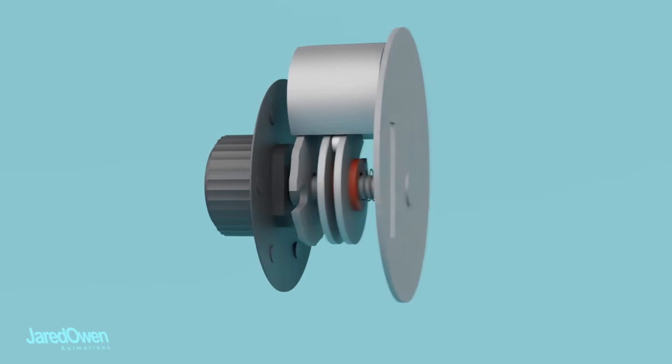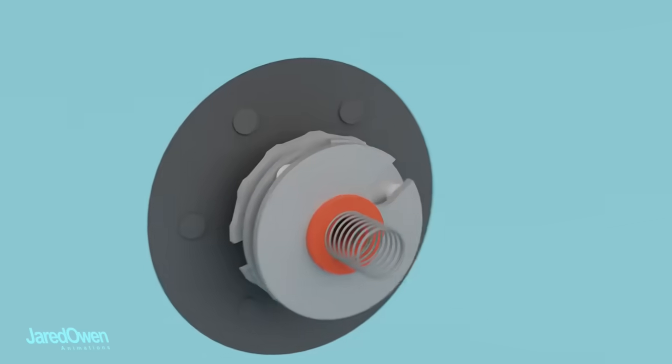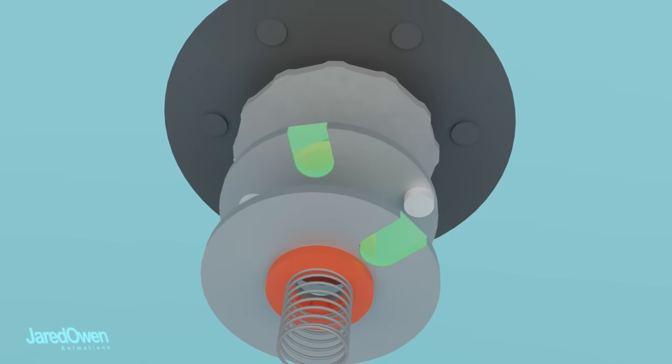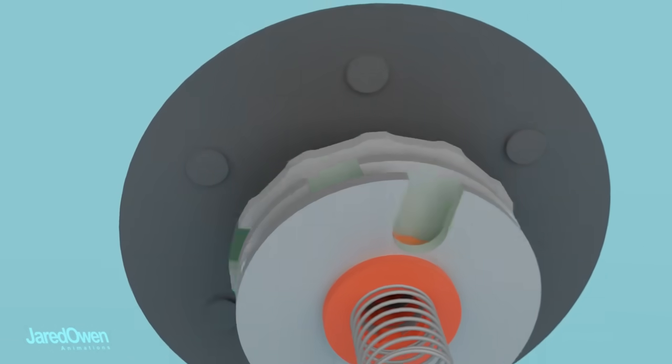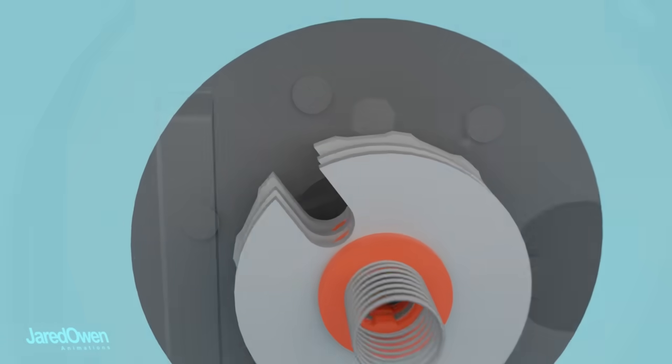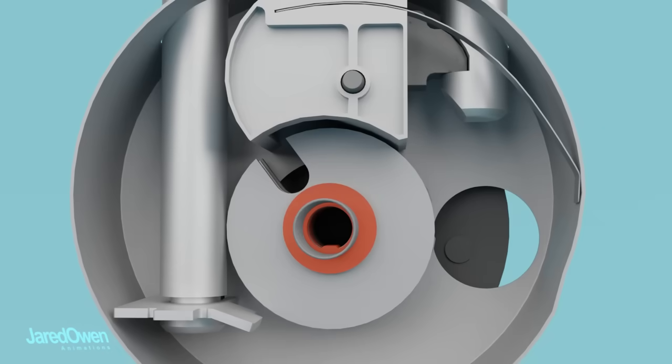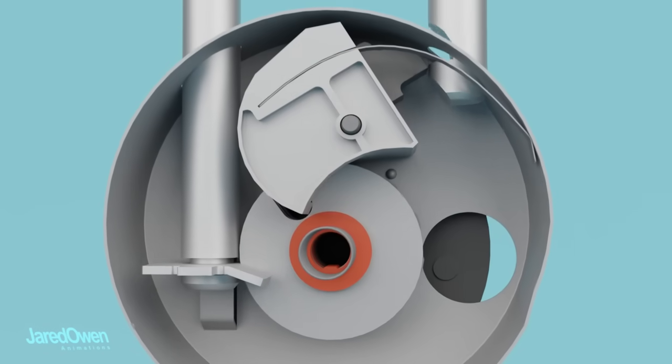This is what it looks like all put together. Each cam has an indentation in them. The lock will open when all three of them are lined up. You can see how the lever can now rotate, which allows the shackle to open.